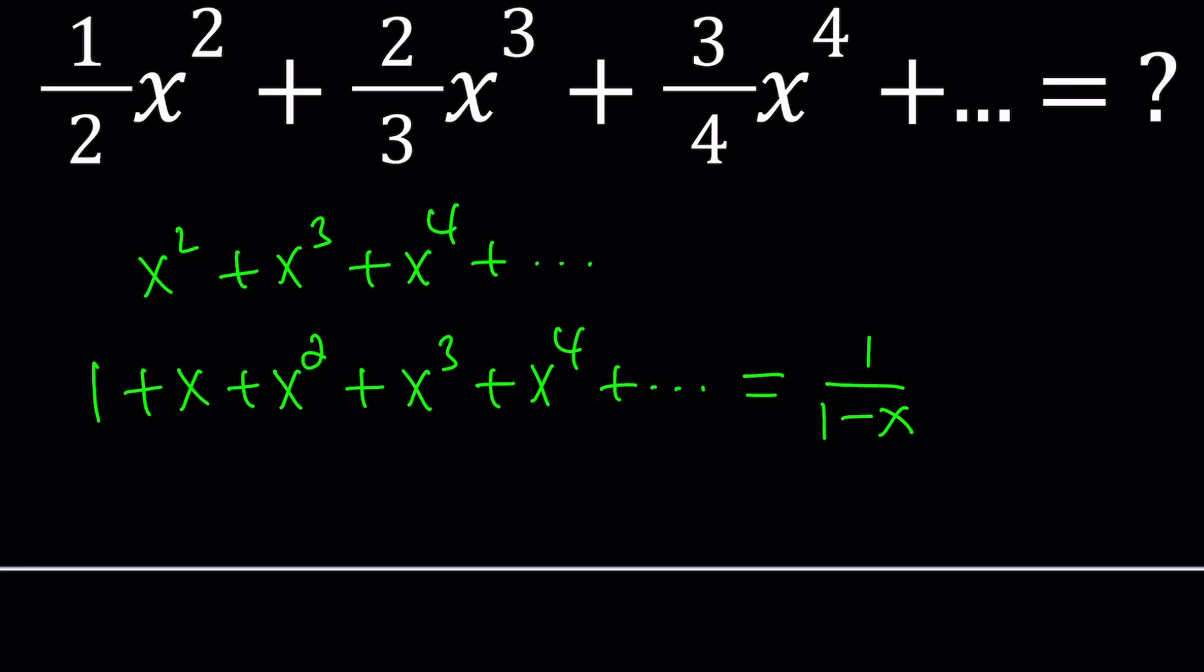Because if you replace x with negative 1, you get 1 half. There's no way this is going to be negative, this is going to be 1 half for a negative value because if you add up a bunch of negative values, anyway, it's not going to work. So where do we go from here?